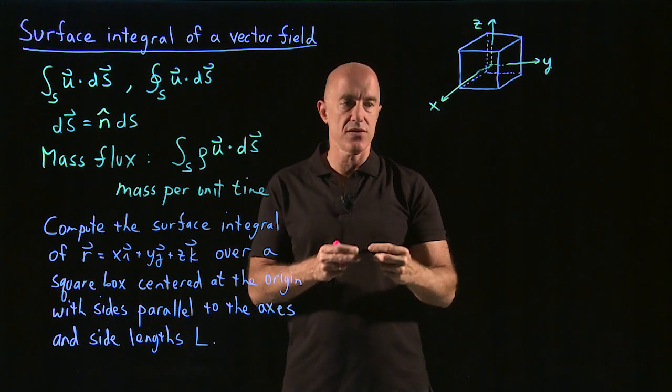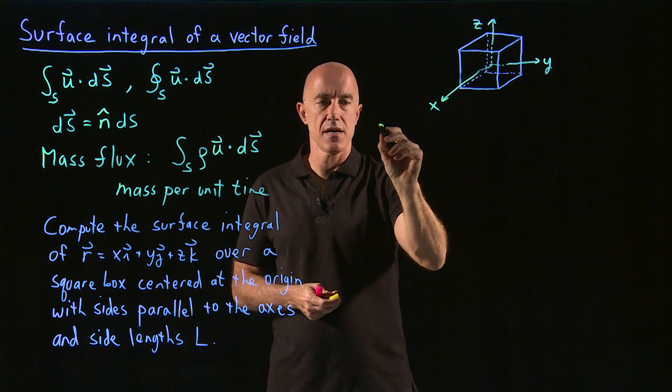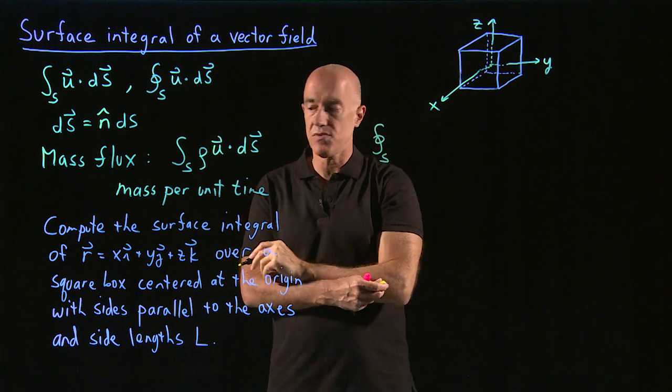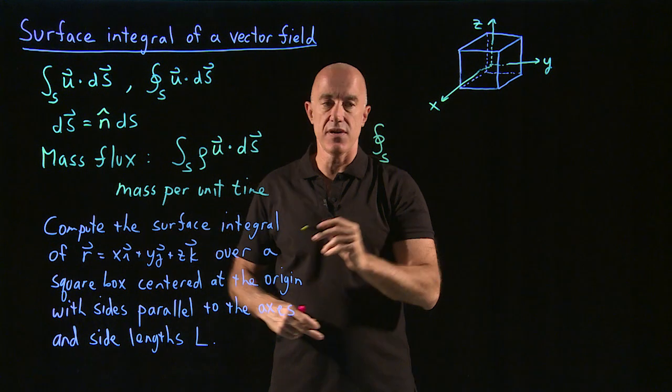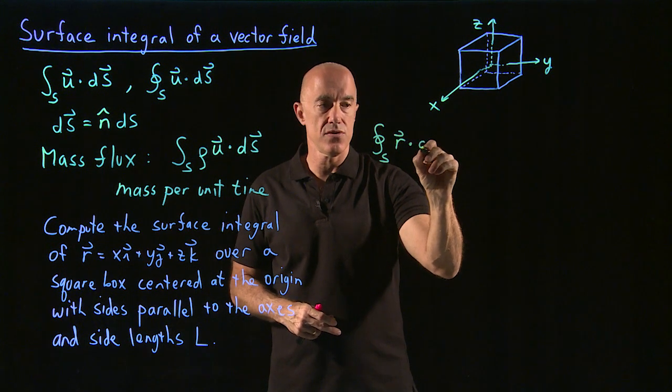So this is a closed integral. So we want to compute the closed integral over this box, over this surface, which is the box of the vector field r, so r dotted into ds.